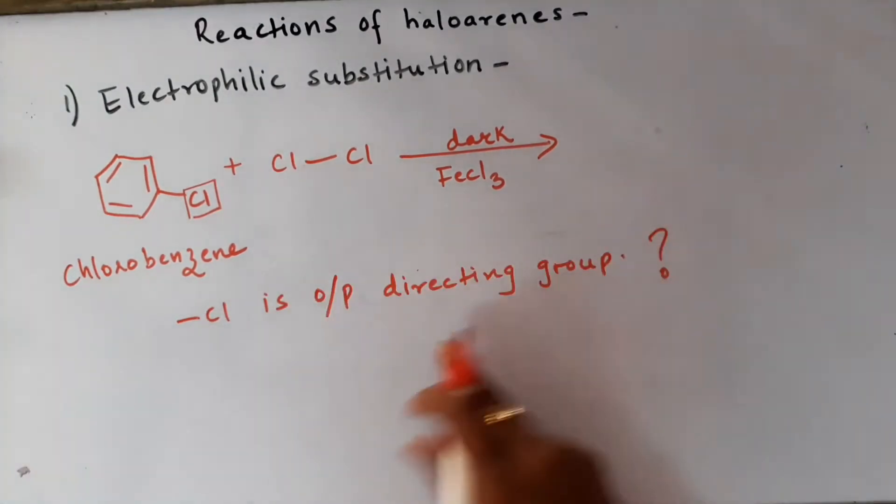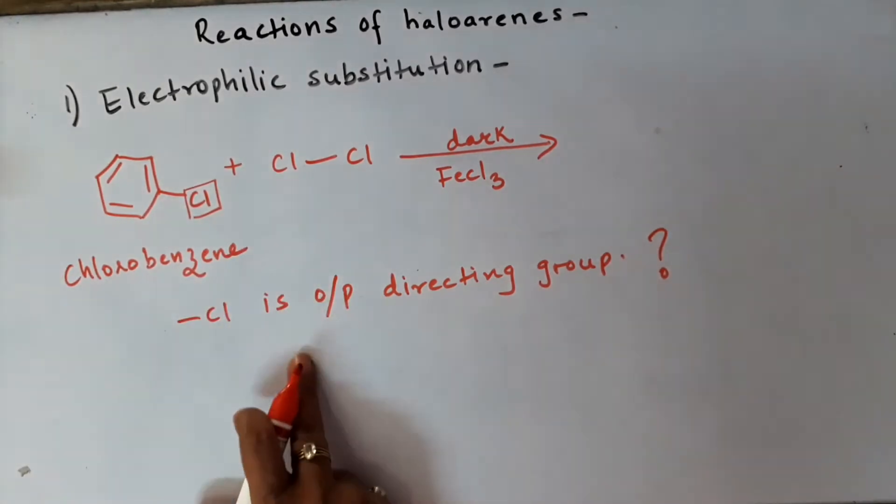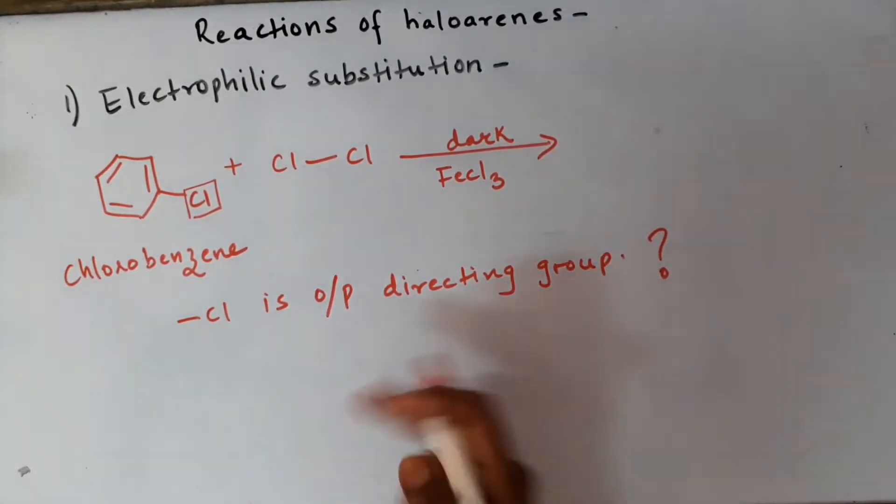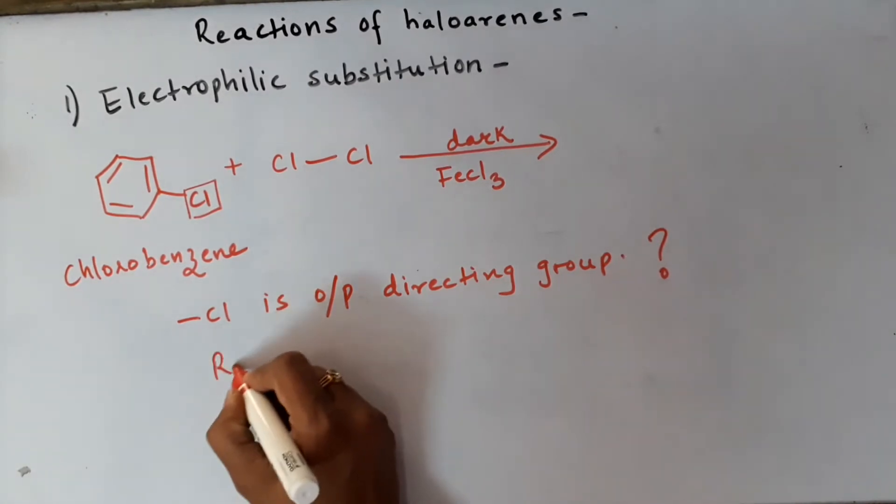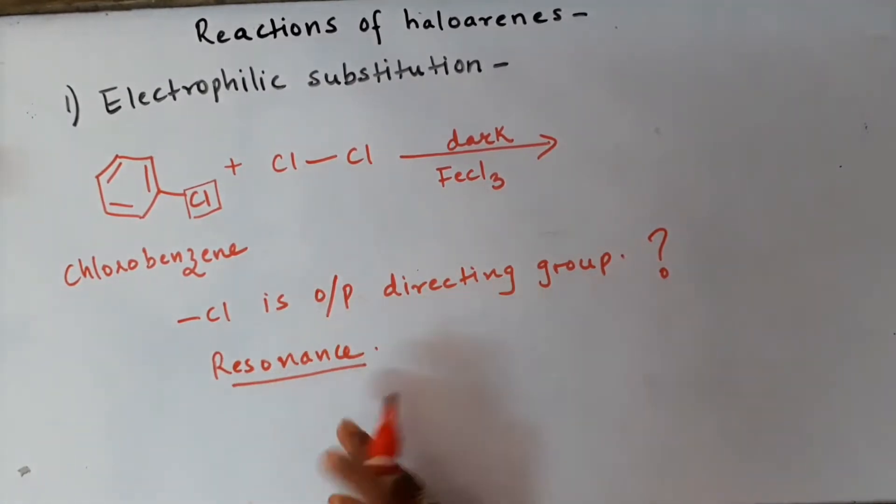Hence it is going to be ortho-para directing group. The reason why it is ortho-para directing is because of the phenomenon of resonance. So resonance is the key factor which makes the chlorine ortho-para directing group. Let's see the resonating structures.